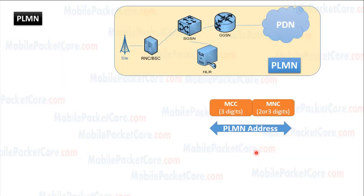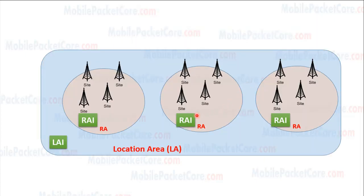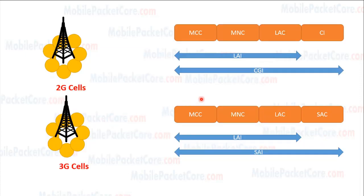In summary, every mobile operator is identified using the PLMN. Inside the mobile operator, we have the location areas, identified by the Location Area Identifier. Every location area contains one or more routing areas, which are identified by the Routing Area Identifier. Inside the routing area, we have several sites. Every site is divided into several cells. CGI identifies the 2G cells, and SAI identifies the 3G cells. Thank you, and see you in the next lesson.